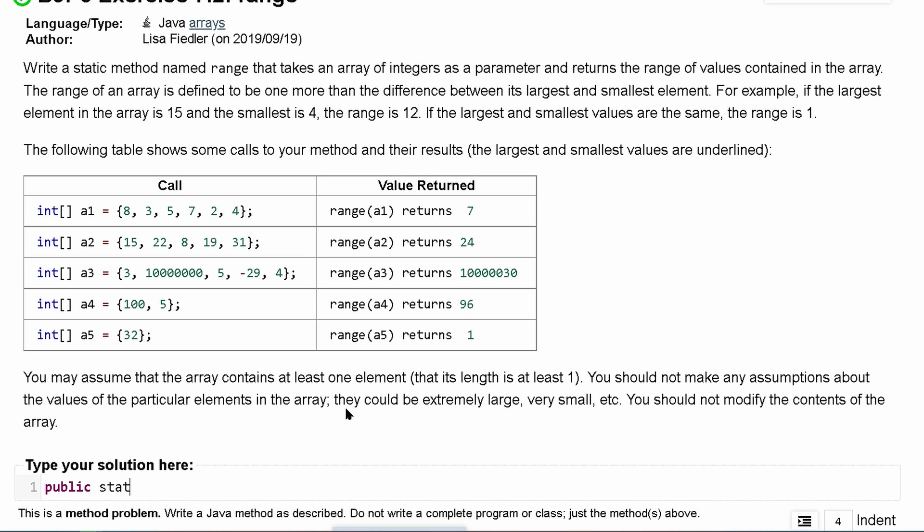So it's a public static method returning an int, it's called range and it accepts an array as its parameter. The range of an array is defined to